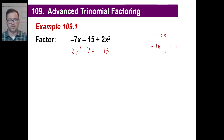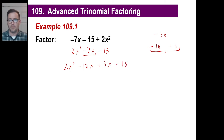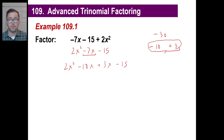So instead of writing negative 7x, we write it as two chunks: negative 10x and plus 3x. We keep the 2x squared as is, giving us 2x squared minus 10x plus 3x minus 15. By the way, if you're wondering about the order — it doesn't matter. You could put 3x first and negative 10x second. Either order works.